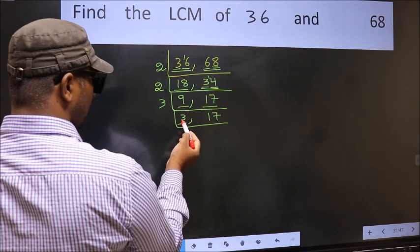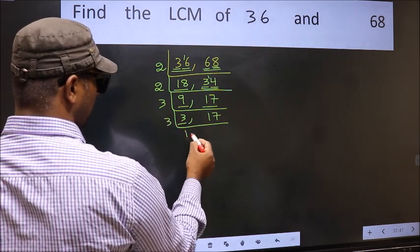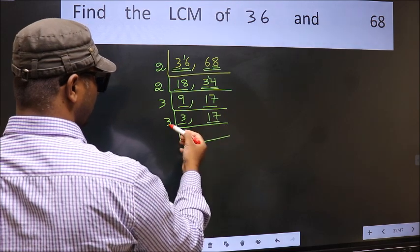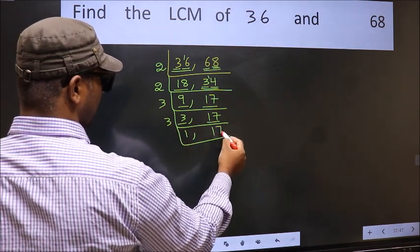Now we have 3 here. 3 is a prime number. So 3, 1 is 3. The other number 17, not divisible by 3. So we write it down as it is.